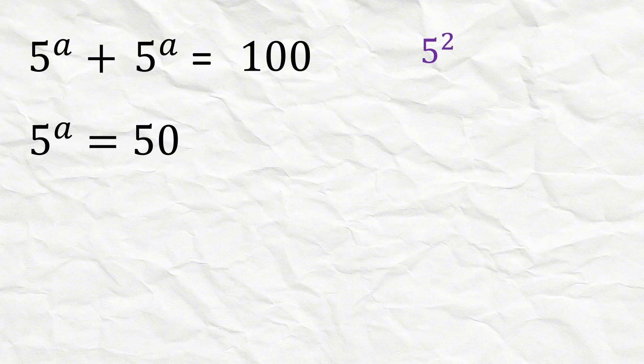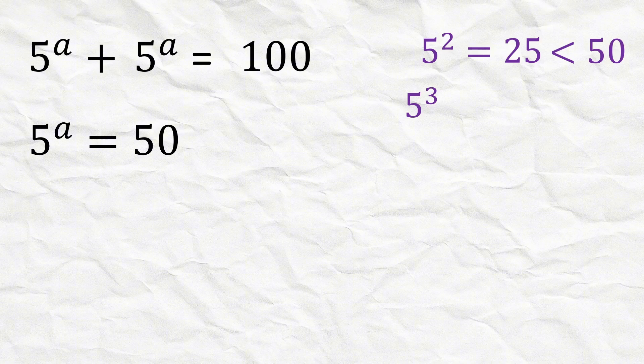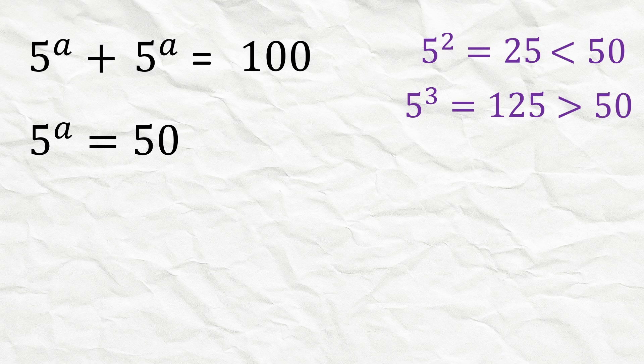Now 5 raised to 2 is 5 squared which is 25, which is less than 50, and 5 cubed is 125 which is greater than 50. This means that the value of a must lie between 2 and 3.